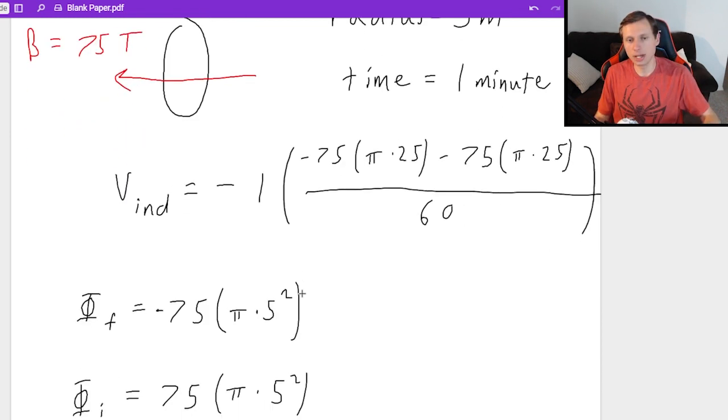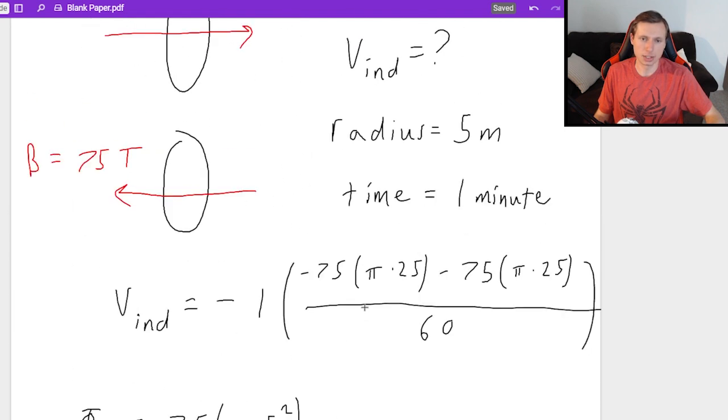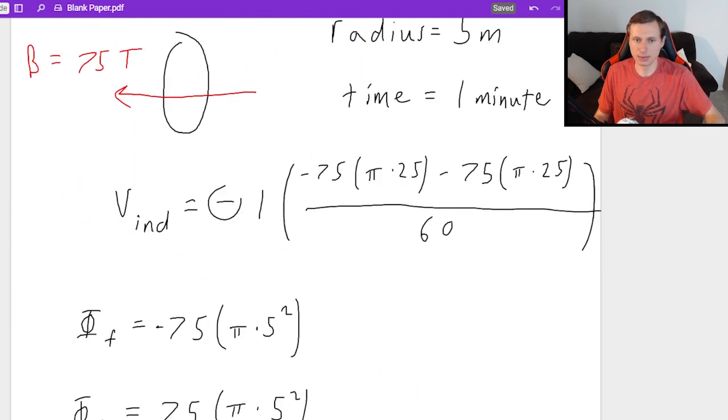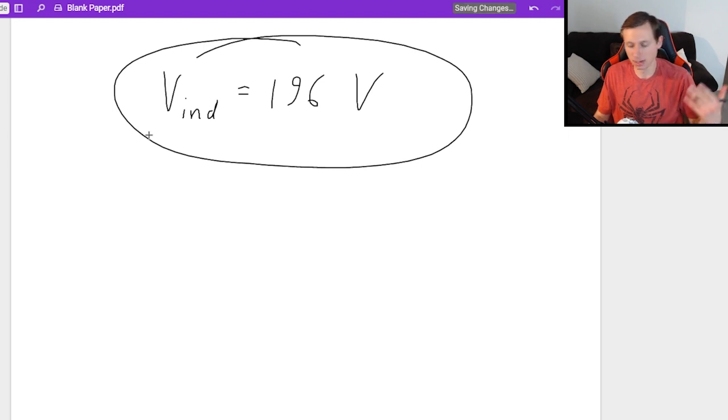And if I plug this in my calculator, then I will get my final correct answer. And I will get a final answer of V induced equals 196 volts. You'll notice I got a positive answer because the two negatives ended up canceling out here and here. And then furthermore, even if I did get a negative answer, I would just make it positive anyway, because I just wanted the magnitude of my voltage. So that's it for Faraday's law.